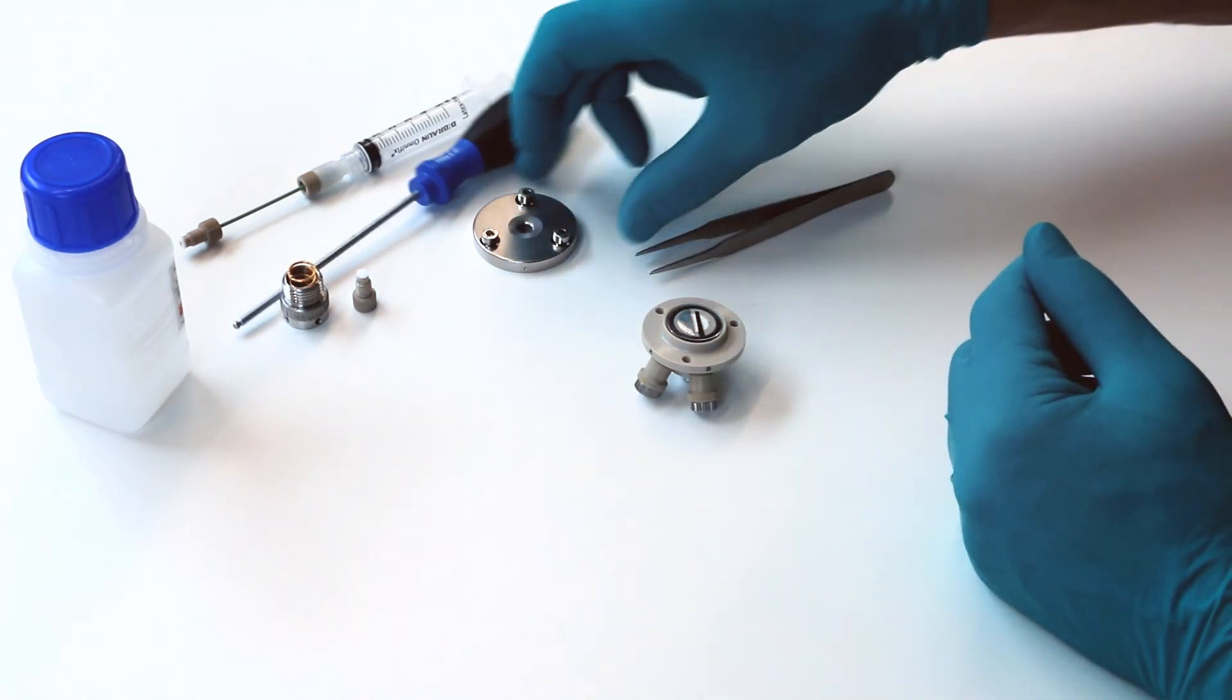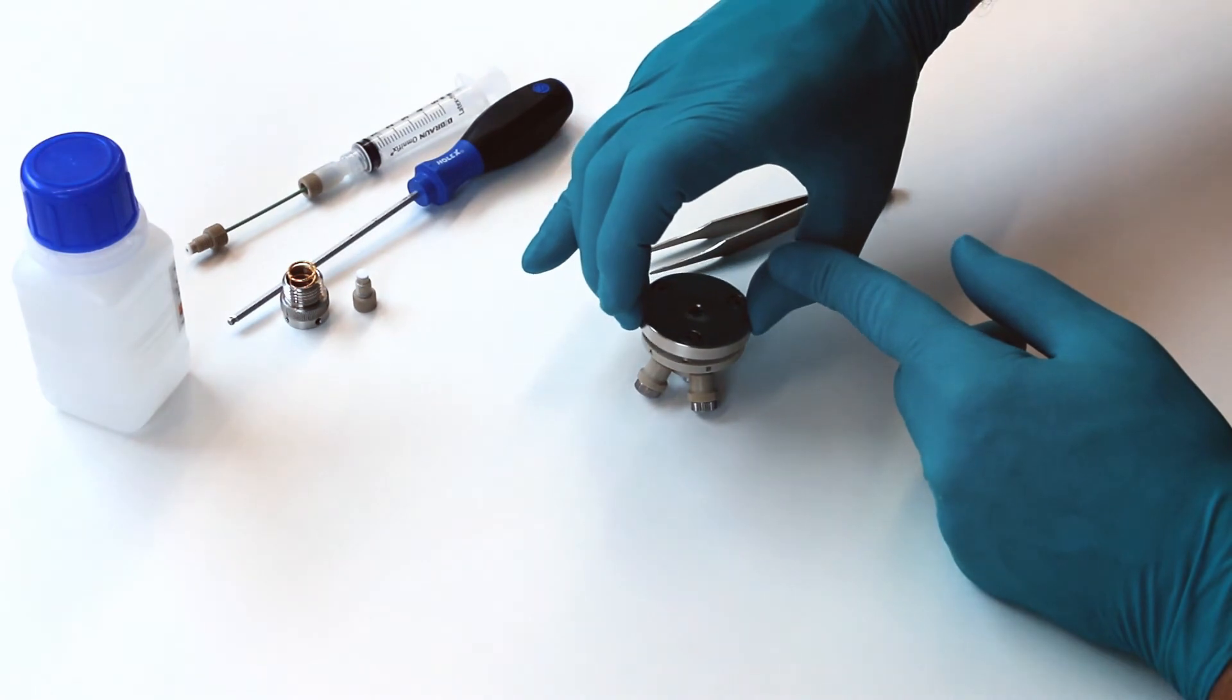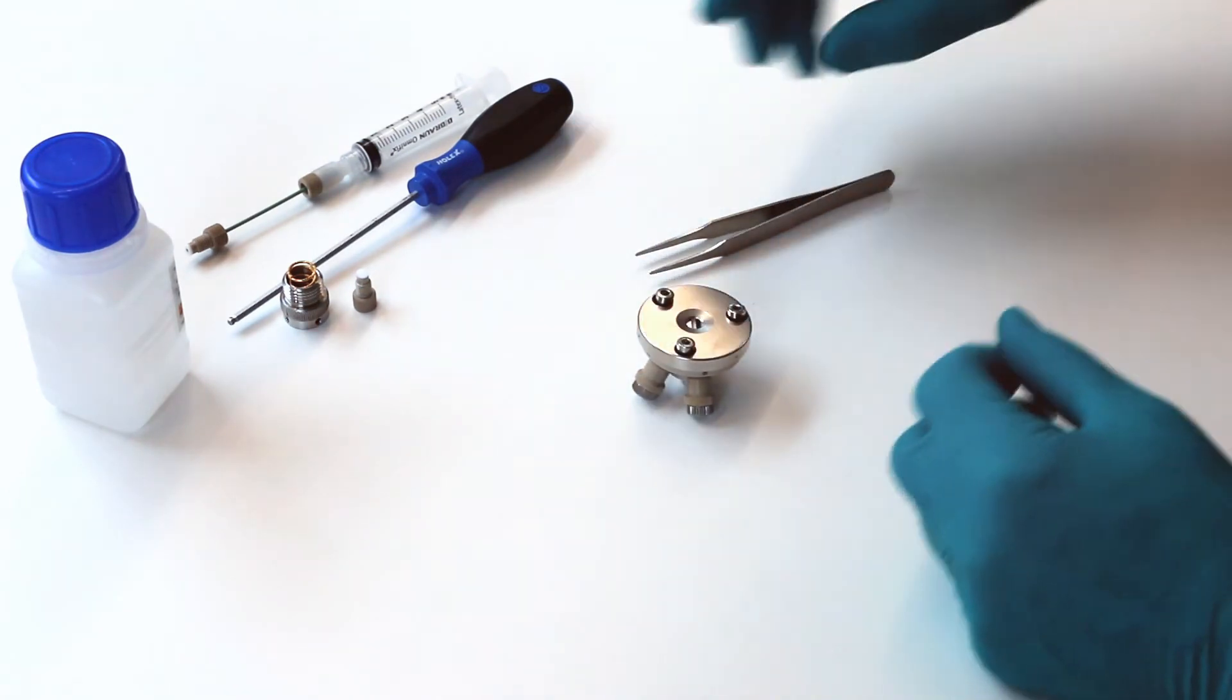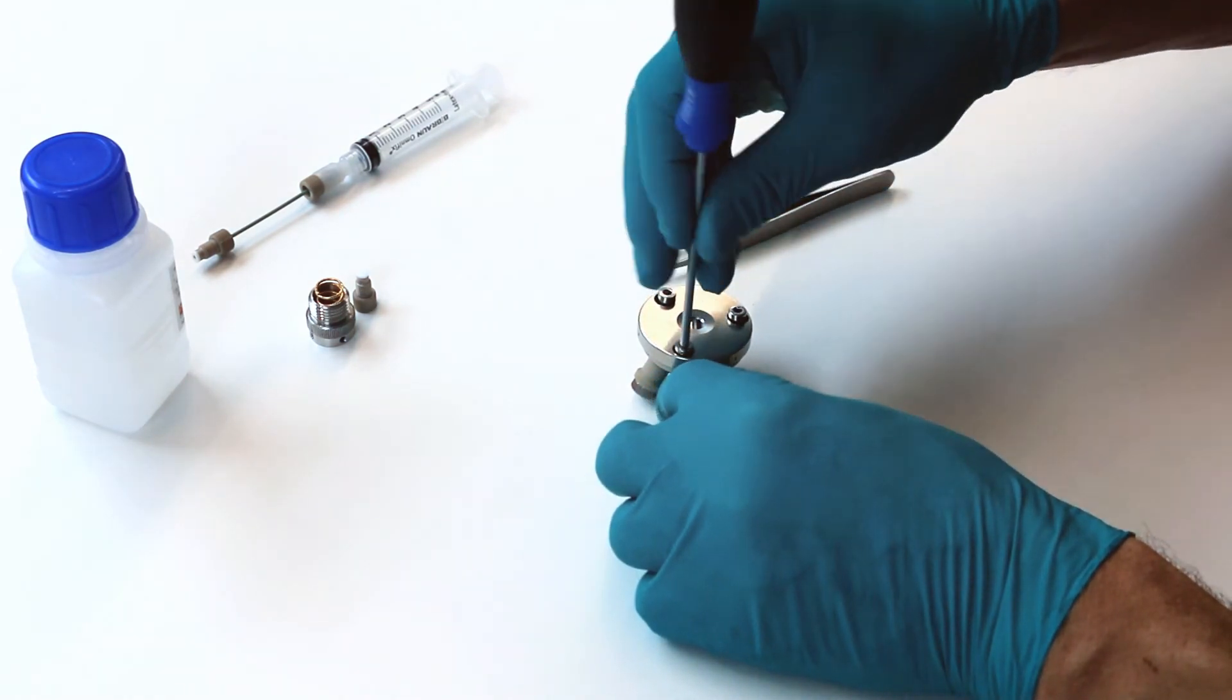Now, attach the cell lid. The cell lid used in this experiment has an inspection hole diameter of 6 mm, which is different from the standard cell lid.